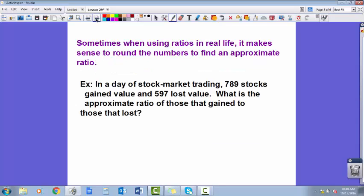All right, our objectives. We talked about how sometimes it makes more sense to find an approximate value for ratios. So I gave an example here of the stock market. In a day of stock market trading, 789 stocks gained value and 597 lost value. What is the approximate ratio of those that gained to those that lost?